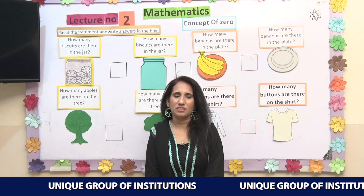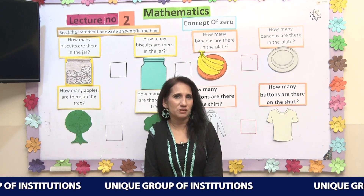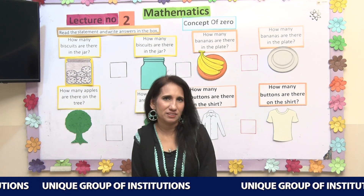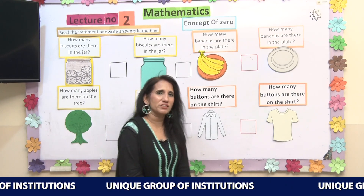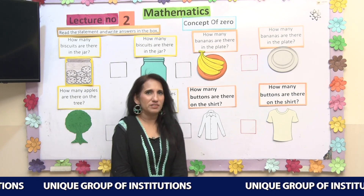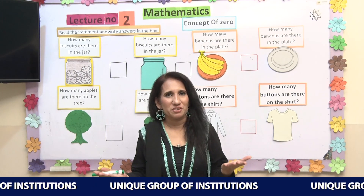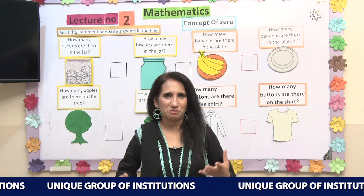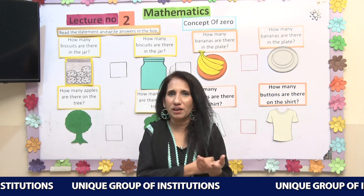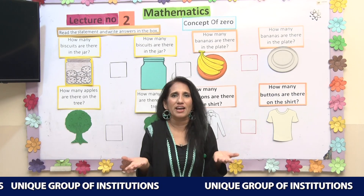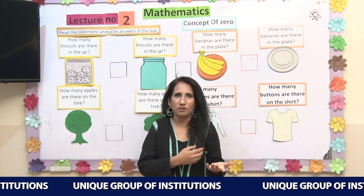Today's lecture is all about zero. Do you know what is zero? If you don't have any idea, I will tell you. Zero means nothing — nothing means nothing, we don't have anything. For example, I have one marker in my hand. If I don't have any marker in my hand, it means I have zero markers. Zero means nothing, not at all.